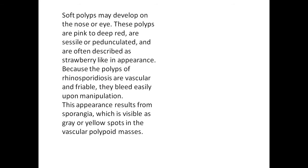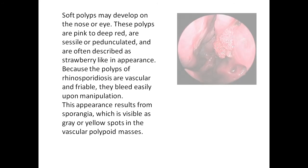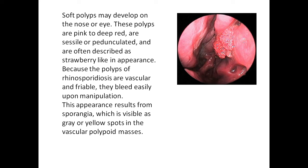Soft polyps may develop on the nose or eye, and these polyps are pink to deep red. They are sessile or pedunculated and are often described as strawberry-like in appearance. Because the polyps of rhinosporidiosis are vascular and friable, they bleed easily upon manipulation. This appearance results from sporangia, which are visible as grey or yellow spots in the vascular polypoid masses.